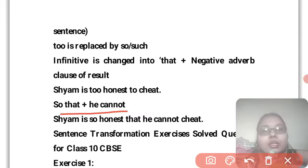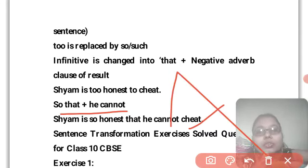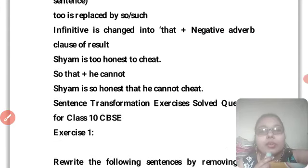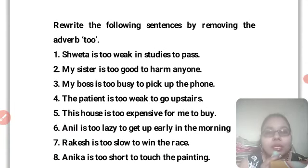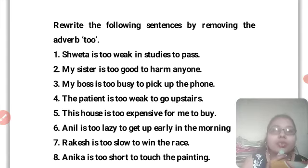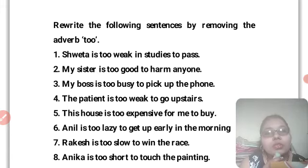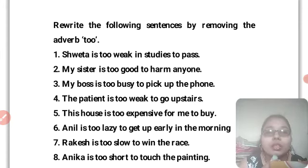Now let's look at a sentence transformation exercise for Class 10. Rewrite the following sentences by removing the adverb 'too' and use 'so' or 'such' instead. The answer uses 'so... that he cannot' to form the new sentence.